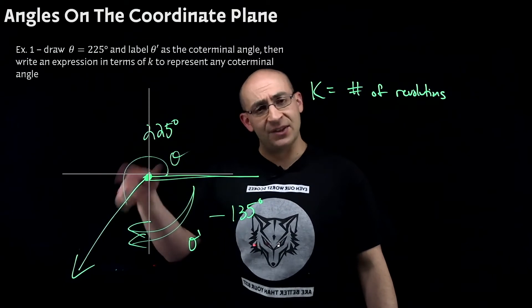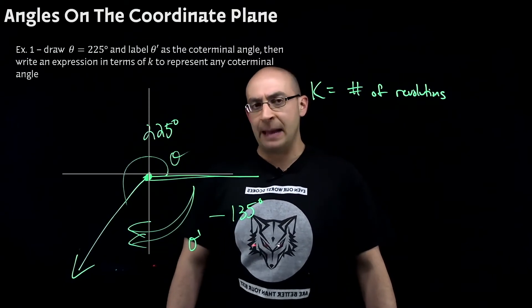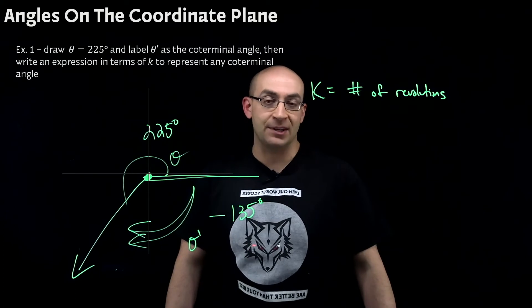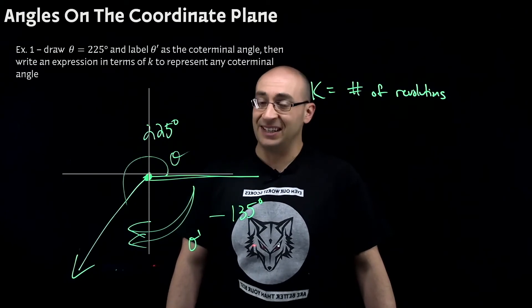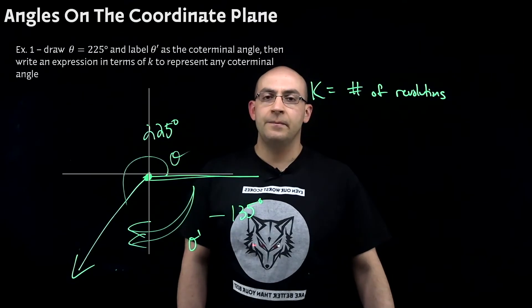So K is going to represent the number of revolutions that we can go about. So we can actually hit the same terminal angle multiple times. So we need to be able to write an expression to represent all of them because there is really an infinite amount of them. So, let's see if we can do that.